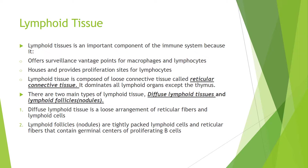Lymphoid tissue is an important component of the immune system because it offers surveillance vantage points for macrophages and lymphocytes, and houses and provides proliferation sites for lymphocytes. Lymphoid tissue is composed of loose connective tissue called reticular connective tissue, and it dominates all lymphoid organs except the thymus. There are two main types: diffuse lymphoid tissues, which is a loose arrangement of reticular fibers and lymphoid cells, and lymphoid follicles, also known as nodules, which are tightly packed lymphoid cells and reticular fibers that contain germinal centers and proliferating B cells.